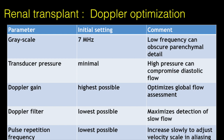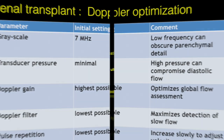A table illustrates the various factors that need to be reset for each patient, as each patient's body habitus differs. Even though your machine has been optimized by the application specialist, you still may need to adjust parameters for appropriate results: transducer frequency as discussed, minimal transducer pressure, highest Doppler gain avoiding noise, lowest Doppler filter to detect low flow, and PRF suited to the velocity range of the required area.